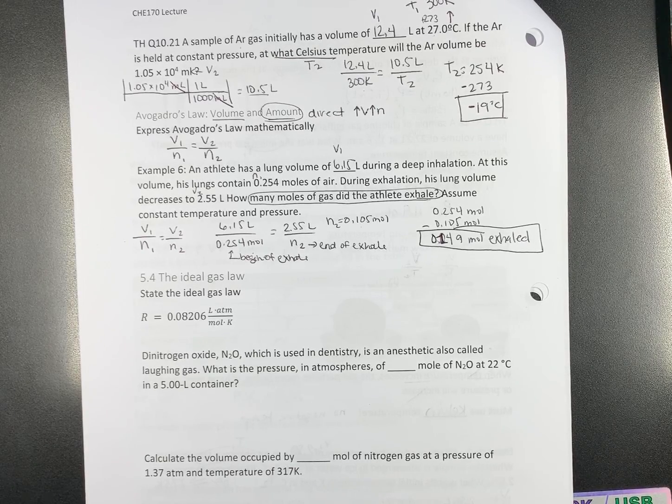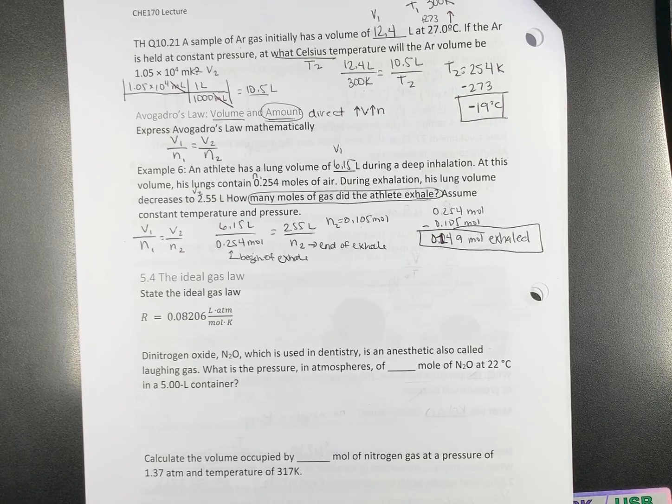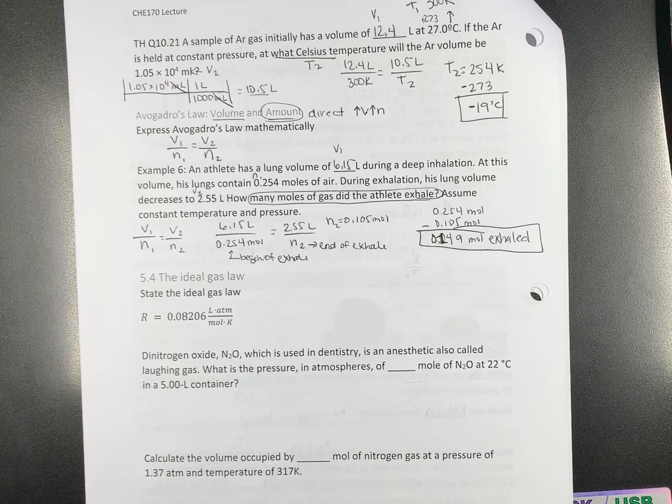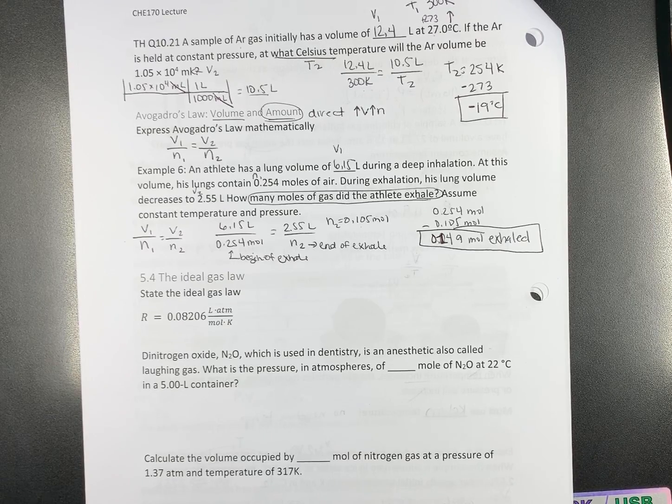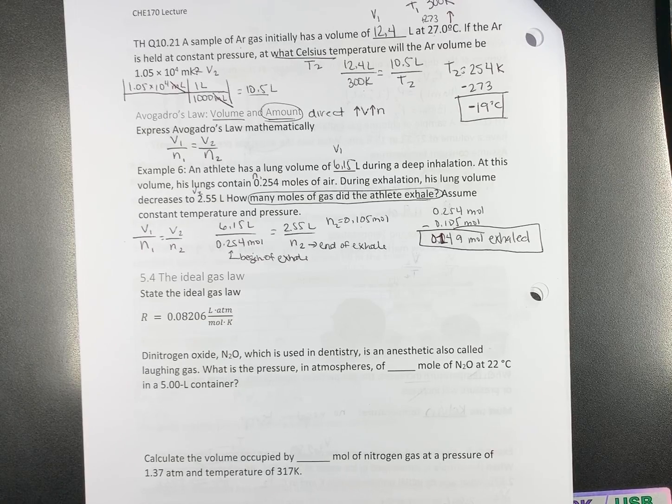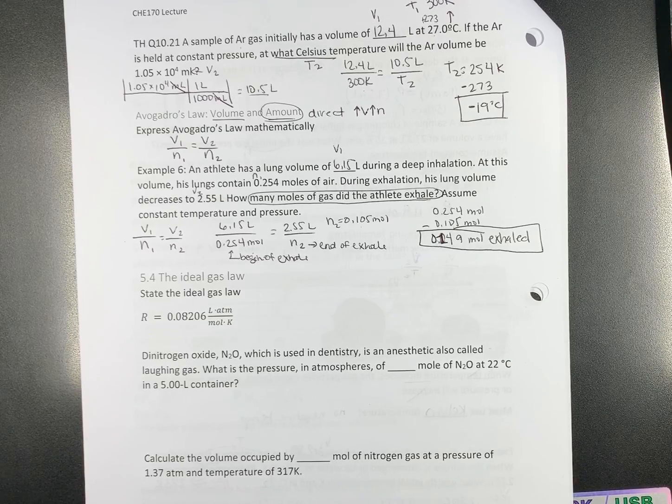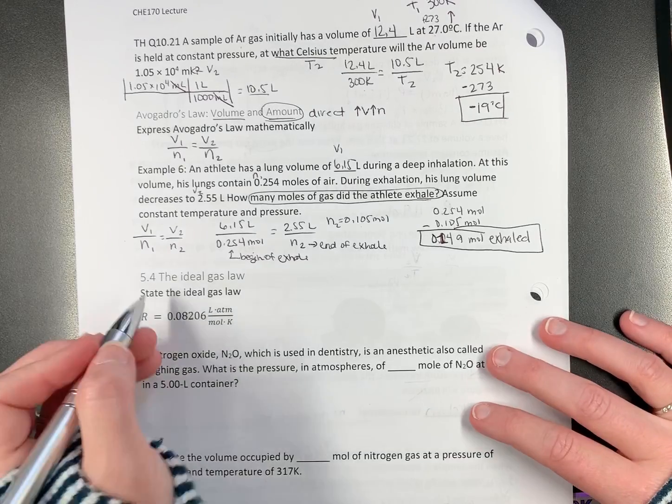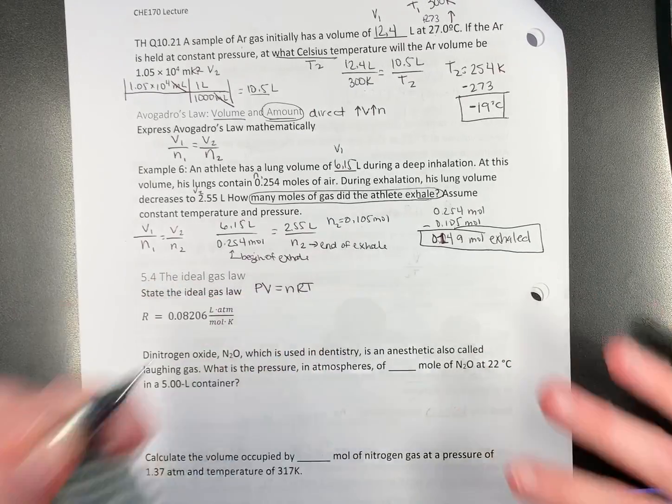The ideal gas law is going to combine all four of our properties of gases. So it's going to combine volume, pressure, temperature, and amount. And how they're related is going to be done with a constant.